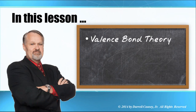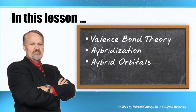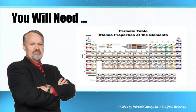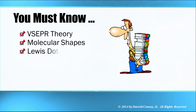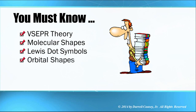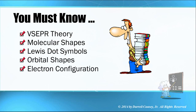In this lesson we'll cover the valence bond theory, hybridization, hybrid orbitals, and much more. You will need your periodic table and you need to be familiar with the VSEPR theory, molecular shapes, Lewis dot symbols, the orbital shapes, and electron configuration.